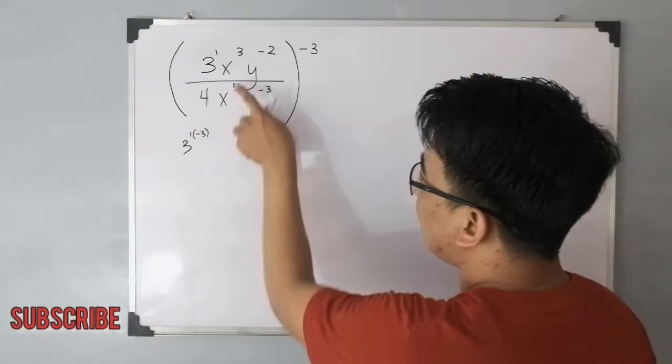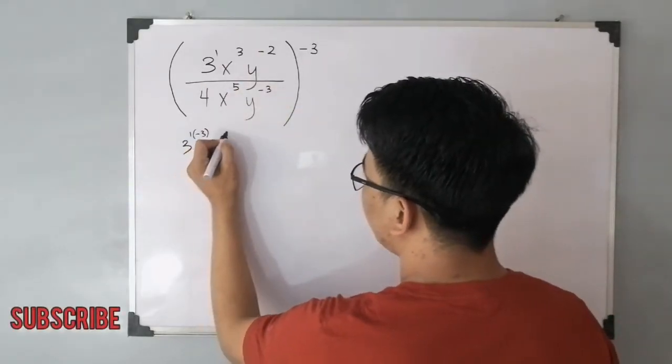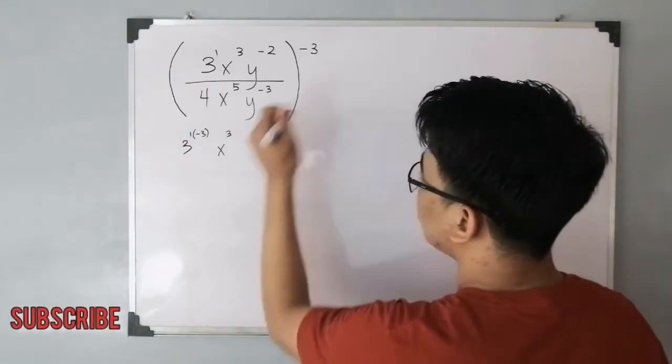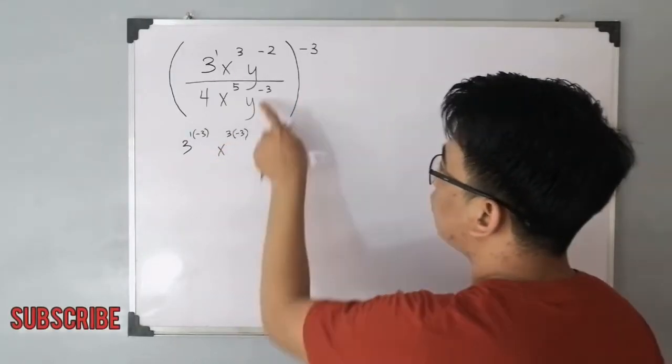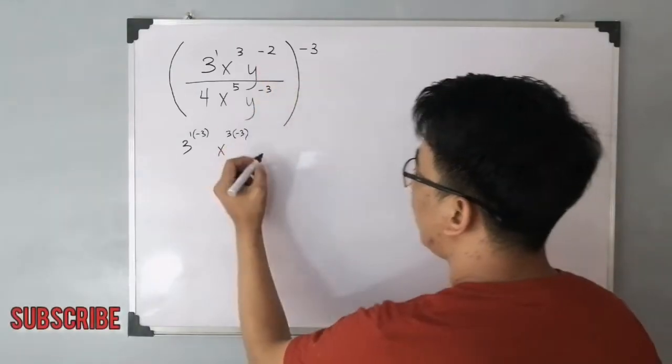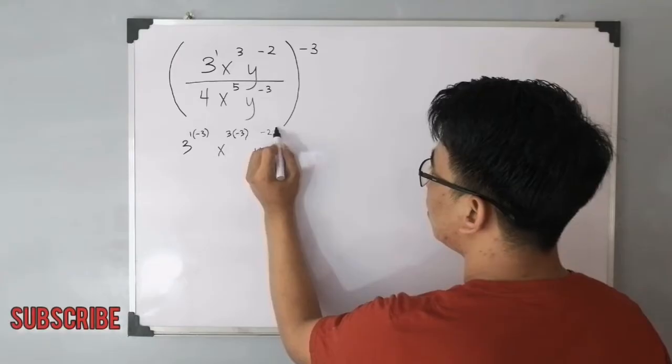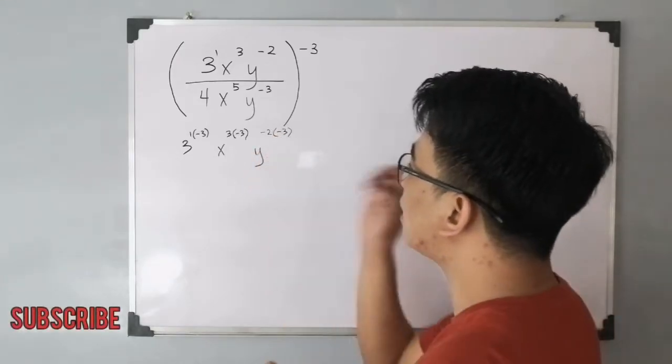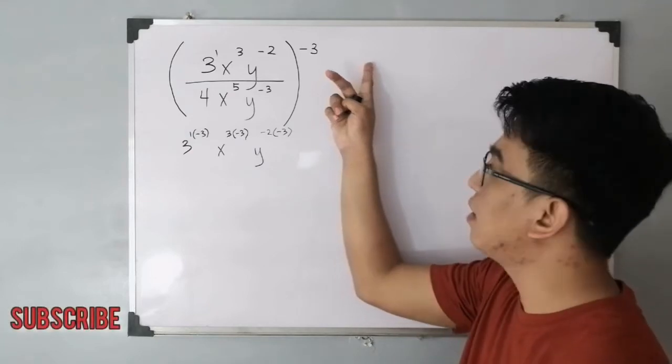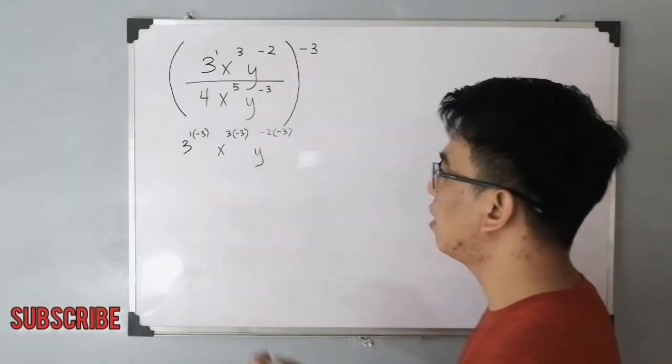And for the second base in your numerator, you have x raised to 3 times your negative 3 exponent. And then for the y variable, you have y raised to negative 2 times negative 3. So as you can see, didistribute natin yung exponent sa labas at sa loob ng ating expression.